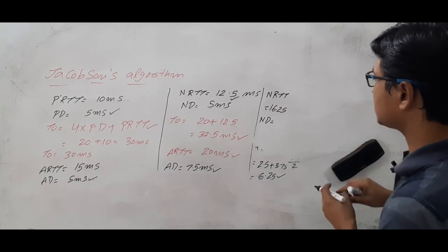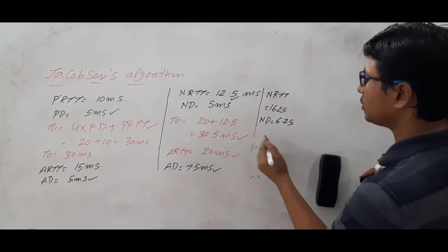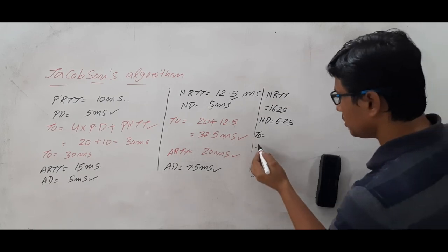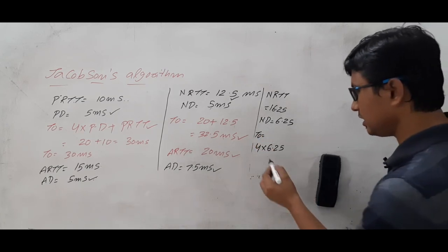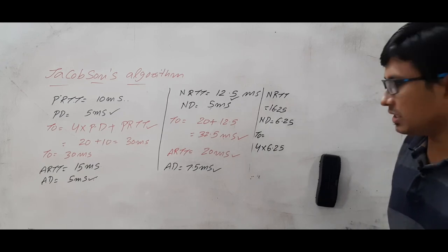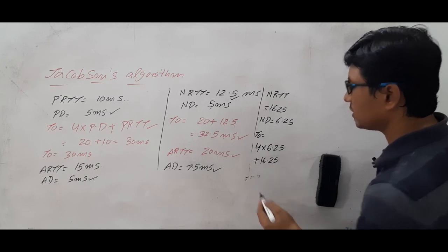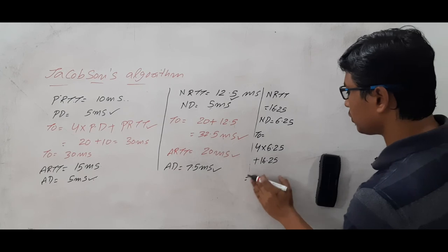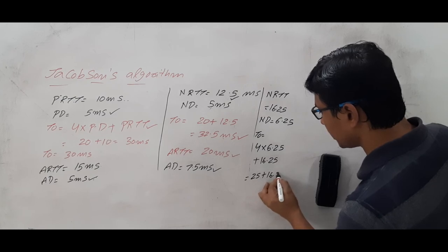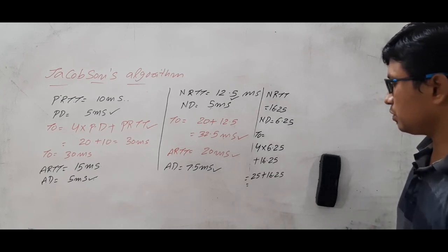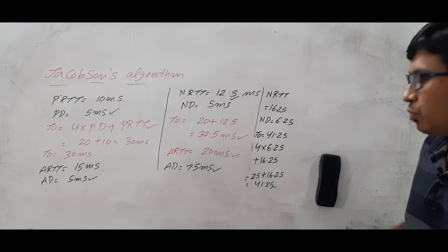The timeout timer formula is 4 into deviation plus round trip time. With deviation 6.25 and round trip time 16.25: 4 into 6.25 is 25, plus 16.25, which equals 41.25 milliseconds. So the timeout timer will be equal to 41.25 milliseconds.